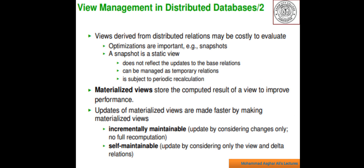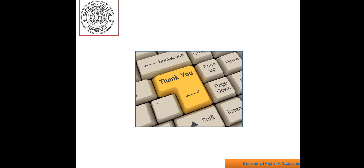Views derived from distributed relations may be costly to evaluate. Materialized views store the computed result of a view to improve performance. Updates of materialized views are made faster and are divided into two types: incremental maintainable, which means updating by considering only changes rather than full recomputation, and self-maintainable, which means updating by considering only the view and delta relations. I hope you all understand what is semantic data control and what is view management. Thank you for watching.